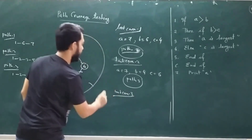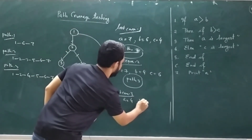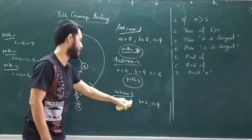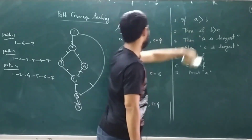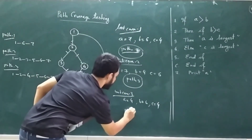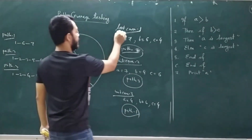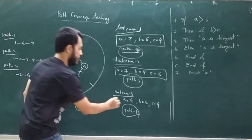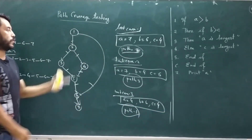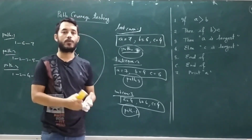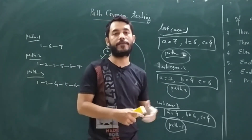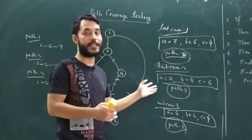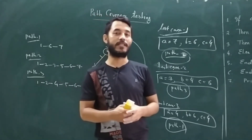Test case 3: a=4, b=6, c=4 — since a is not greater than b, you cover the first path, path one. So test case one covers path two, test case two covers path three, and test case three covers path one. This is the technique to find the path coverage testing in white box testing. Hope you understood this video. If you have any comments or suggestions, please leave them in the comment section. If you're new to my channel, please subscribe. Thank you.